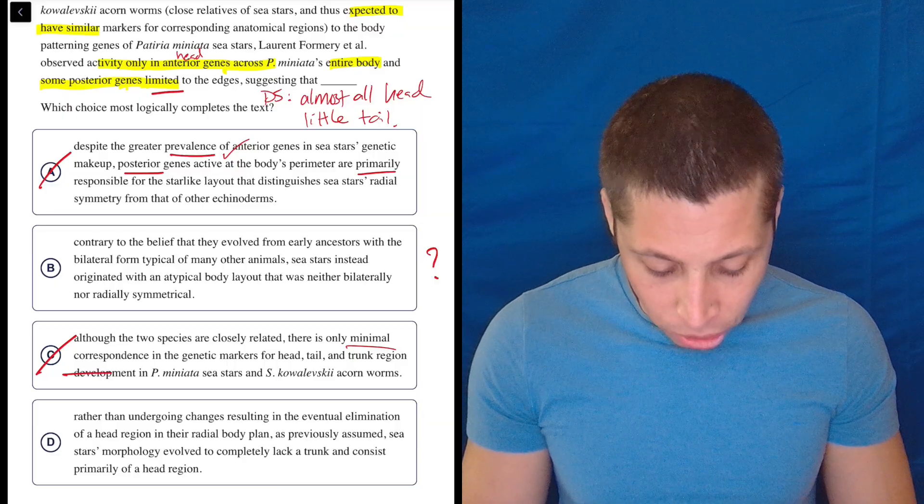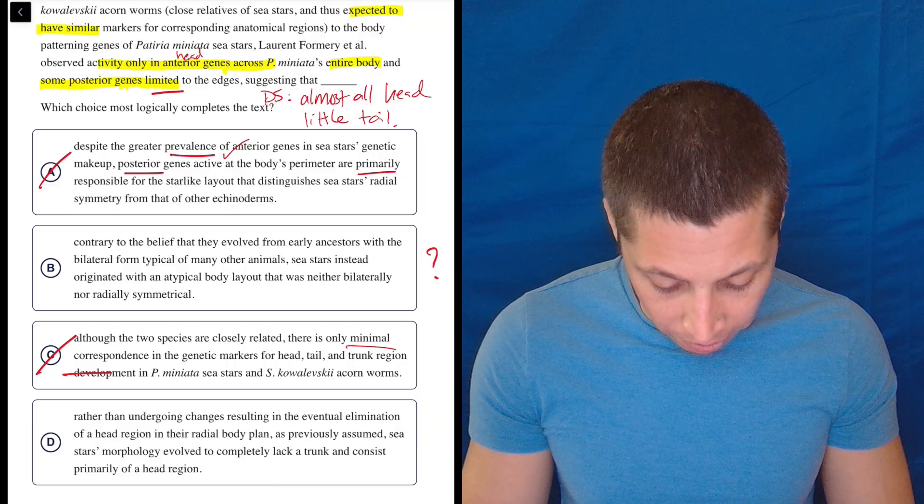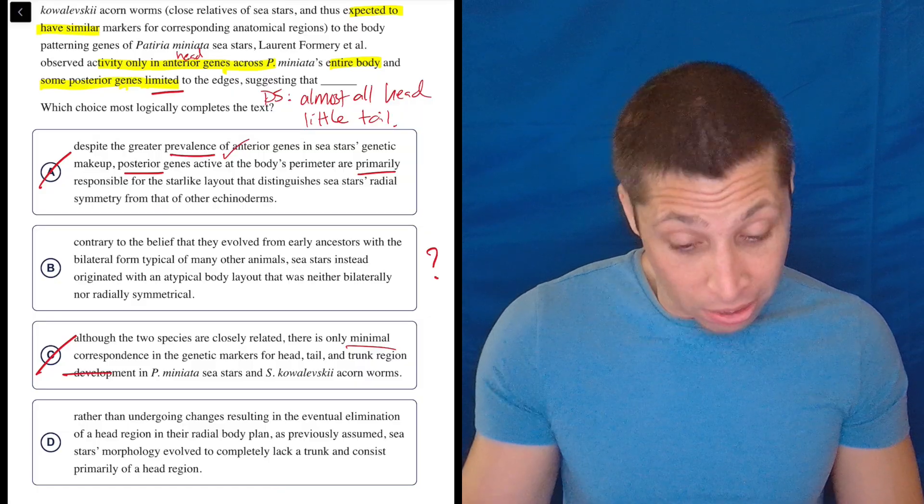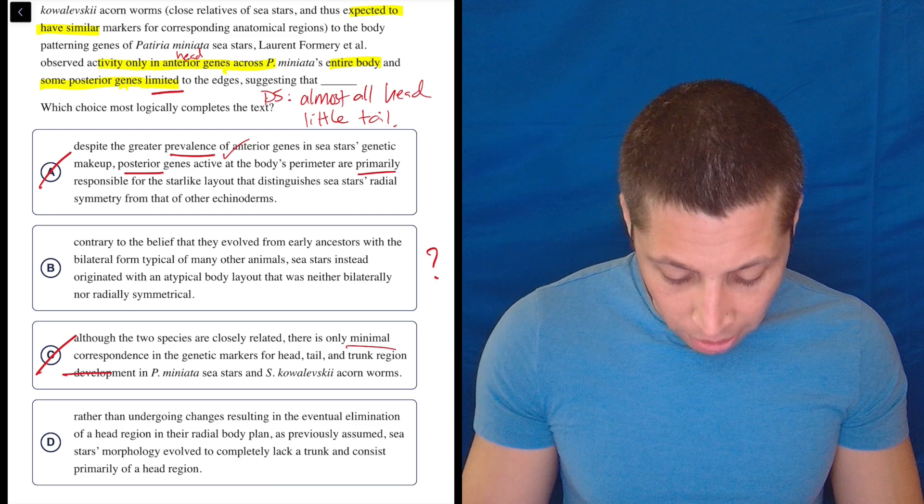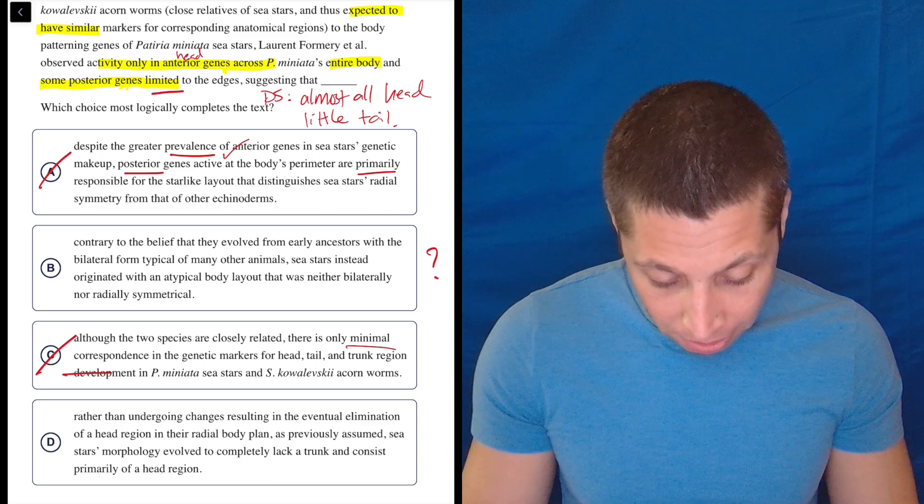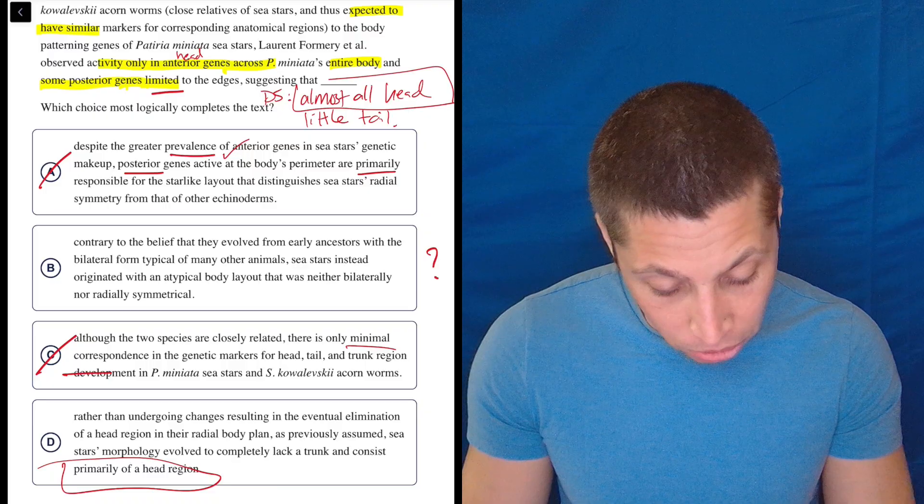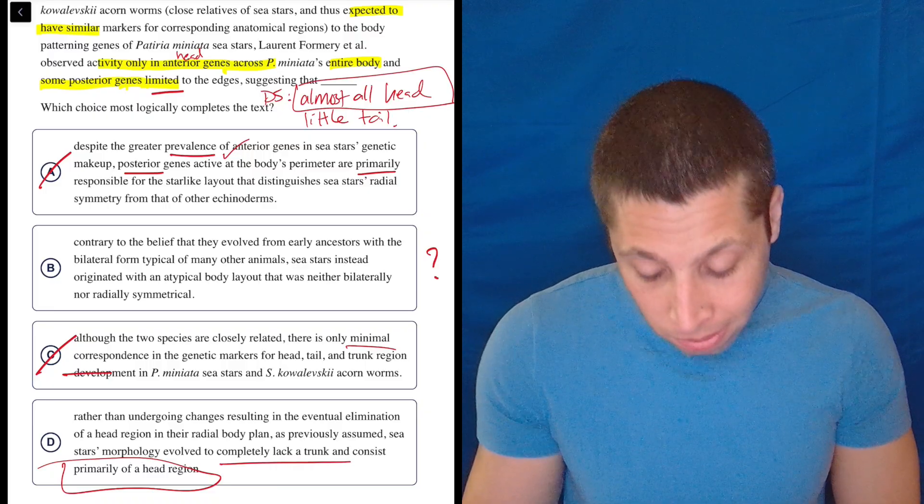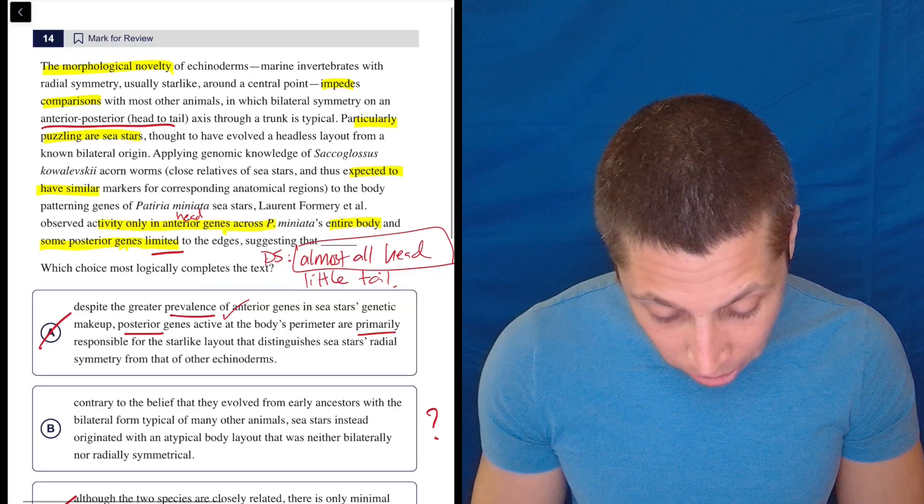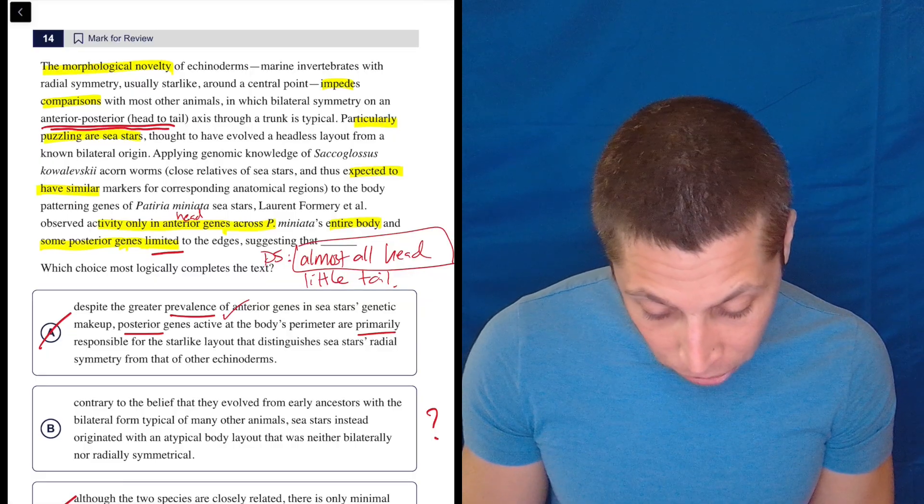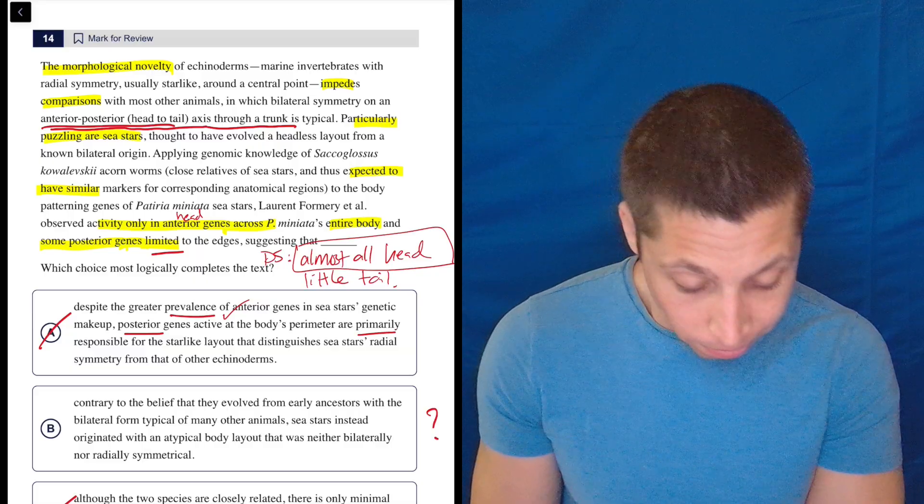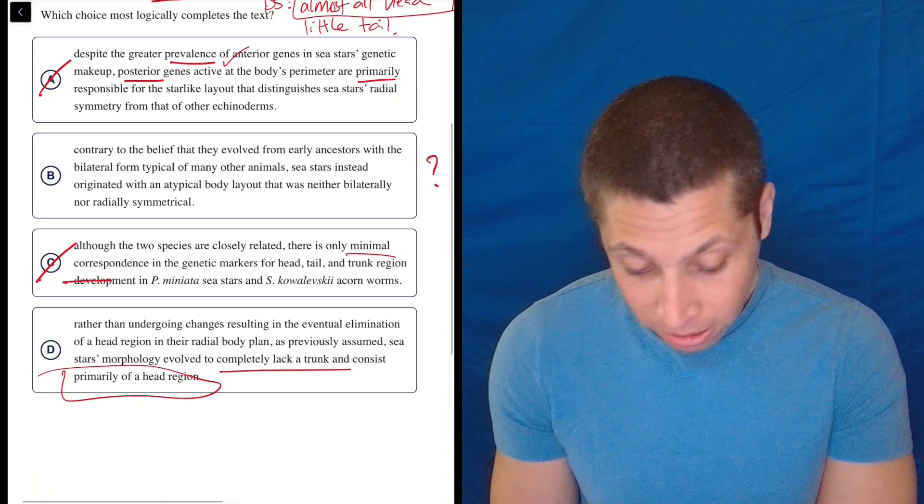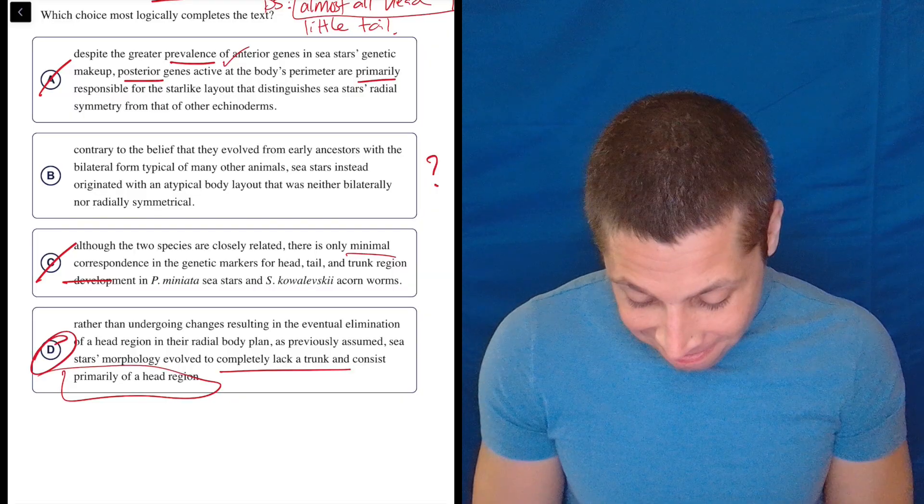D. Rather than undergoing changes resulting in the eventual elimination of a head region in their radial body plan. So let's keep going. As previously assumed, sea star's morphology evolved to completely lack a trunk and consists primarily of a head. Primarily of a head. Almost all head. Completely lack a trunk. Is a trunk a tail? We can go back. I remember them using that word. Yeah. Anterior, posterior, head to tail, axis through a trunk. Trunk. So they don't have a trunk. I'm good with that. Right? I mean, trunk, tail, I'm good with it. Easy answer.